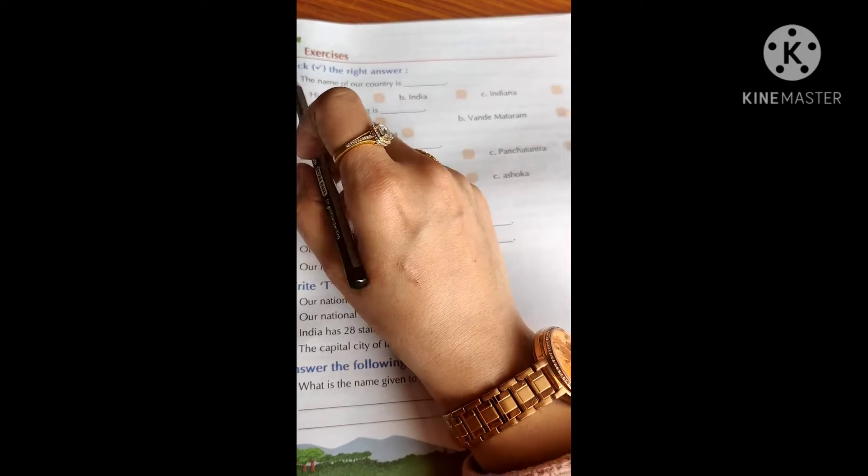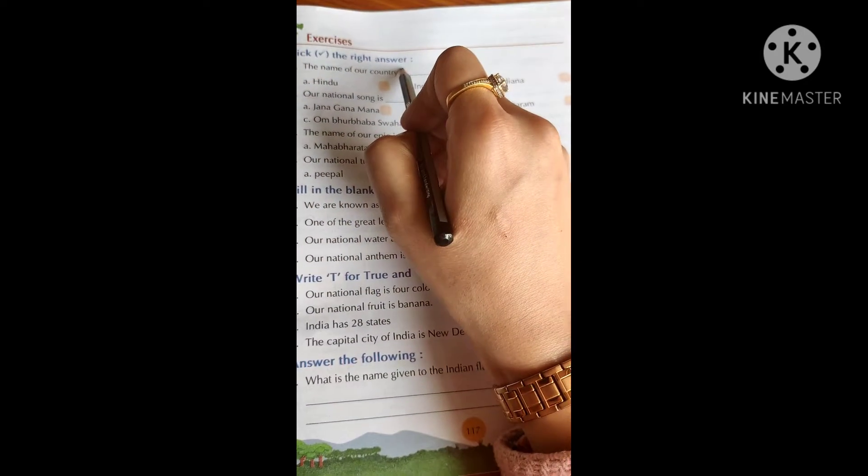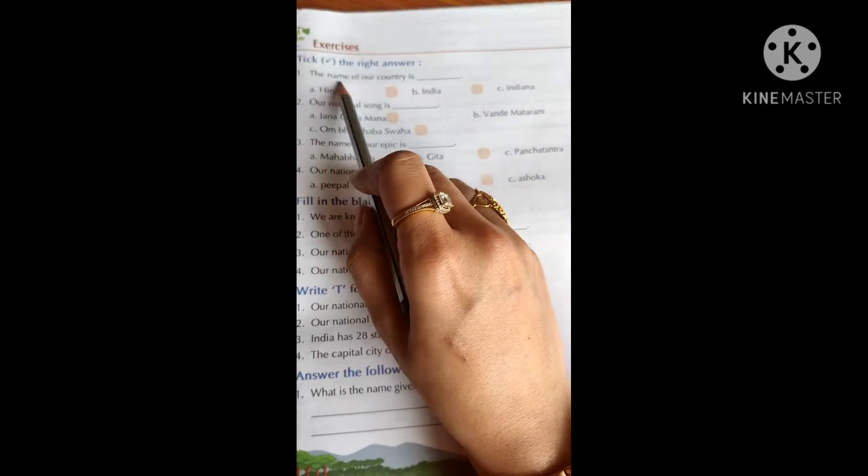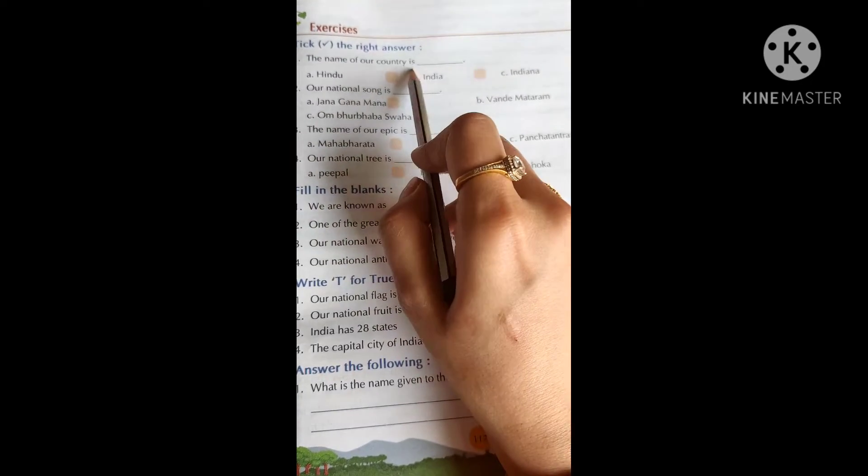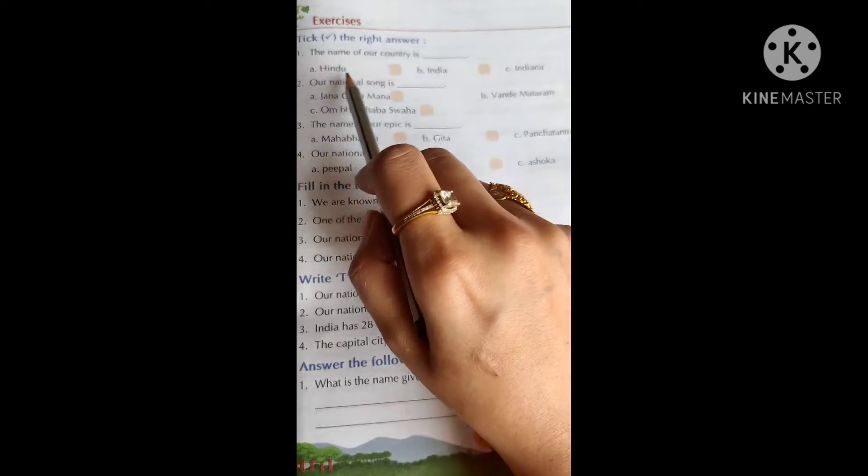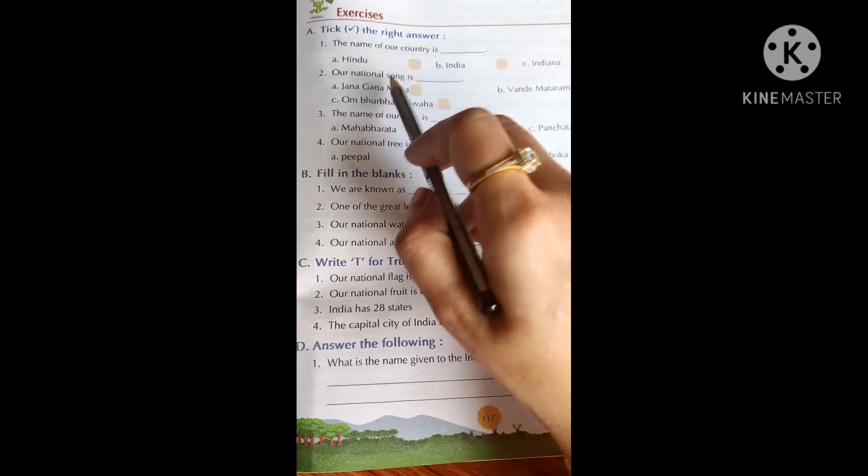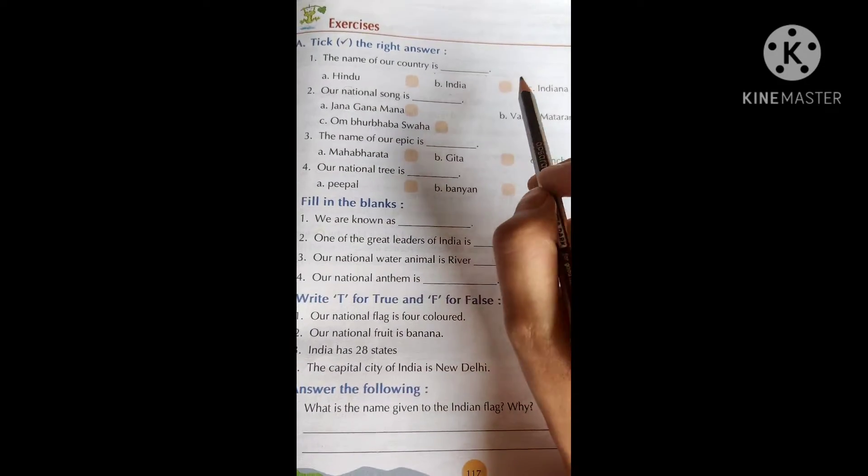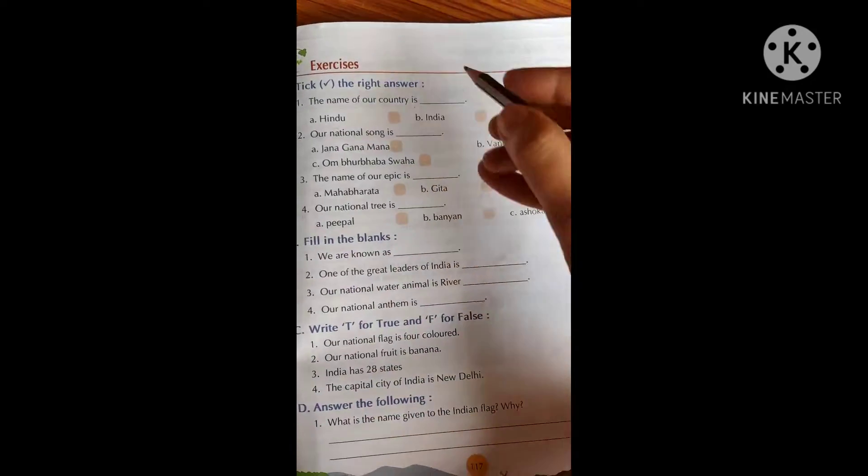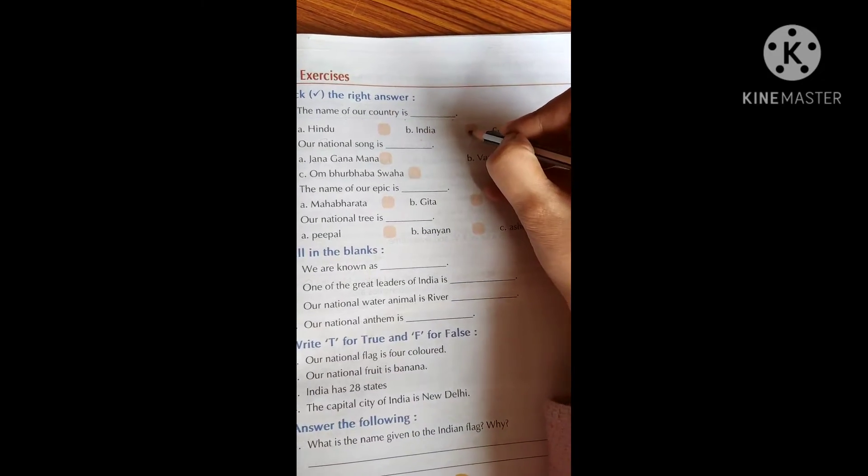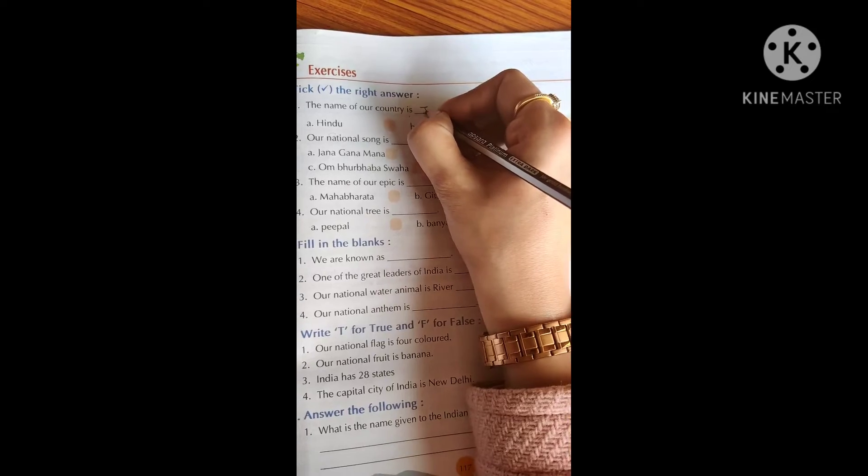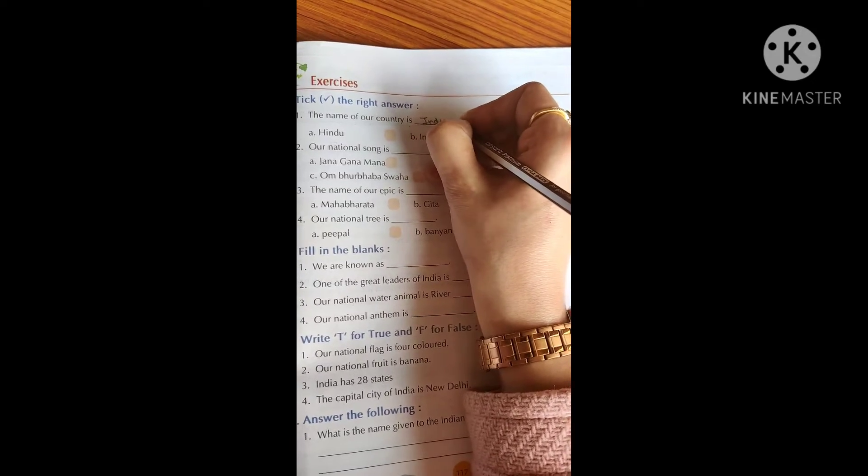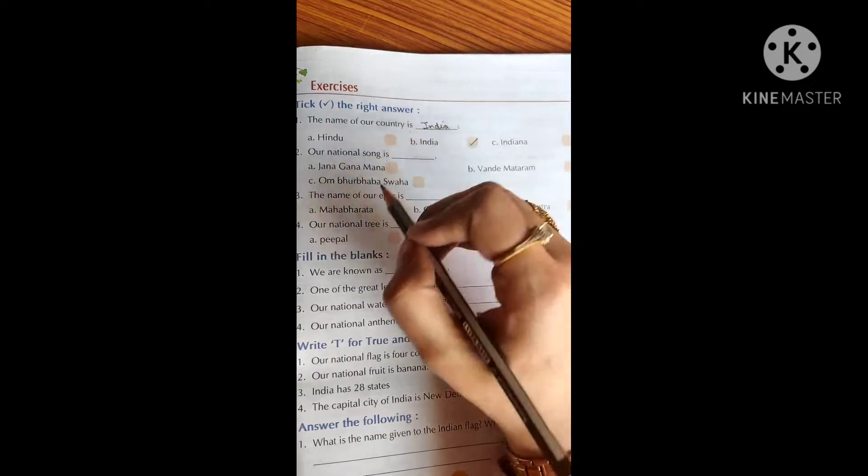Let's start with the exercise now. First, part A is tick the right answer. The name of our country is dash. So here are the options: Hindu, India, Indiana. So what is the name of our country? Yes, very good. It's India. So we will write India here. The name of our country is India.